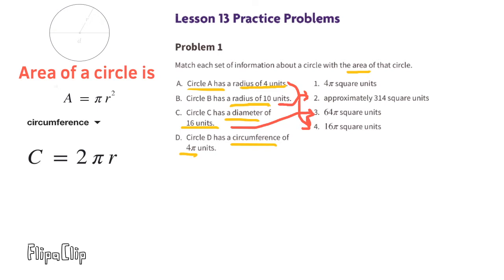D. Circle D has a circumference of 4 times pi units. This information tells us that the circumference equals 4 times pi. That means that the radius must be 2, because 2 times 2 equals 4. So both the circumference is 4 times pi, and the area is 4 times pi square units. Circle D matches with 1.